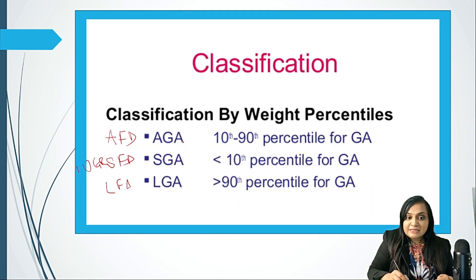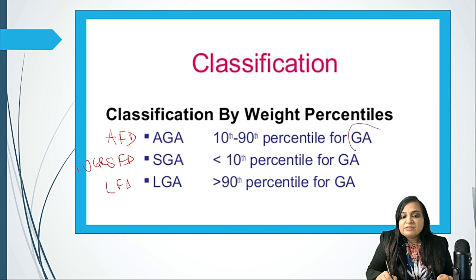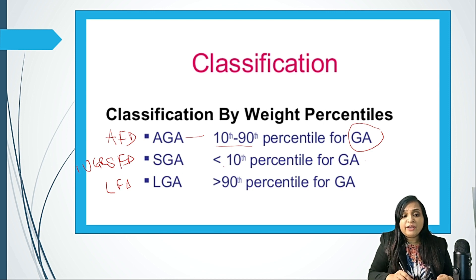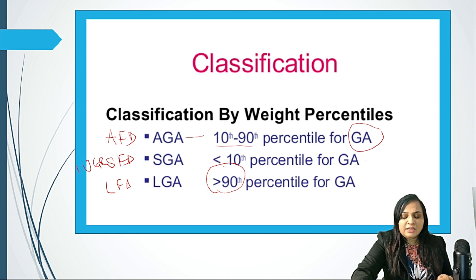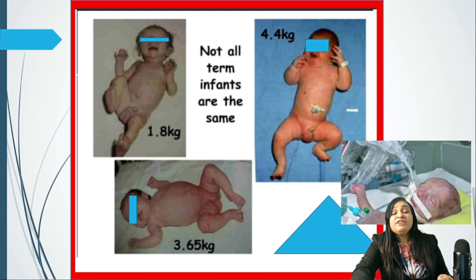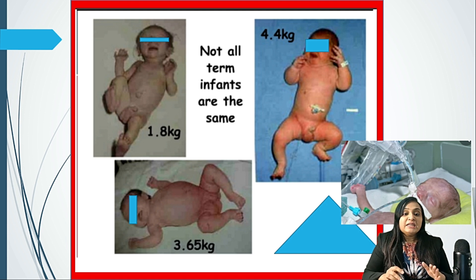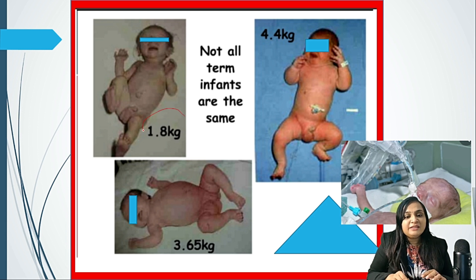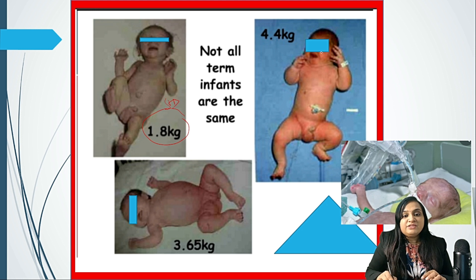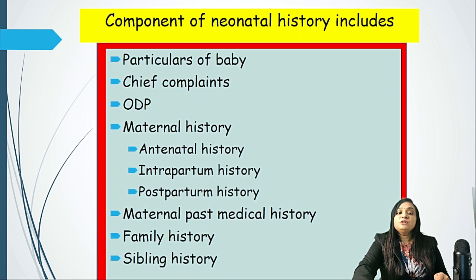To summarize: if the weight of the child as per gestational age is between the 10th and 90th centile, it is AGA. Less than the 10th centile for GA is called SGA, IUGR, or SFD. More than the 90th centile is large for gestational age. We cannot decide AGA, SGA, or LGA by just looking at the weight — we need the corresponding gestational age. For example, all three term babies between 37 to 41 weeks: one weighs 1.8 kg (SFD), one weighs 4.4 kg (LFD), and one is appropriate for date.